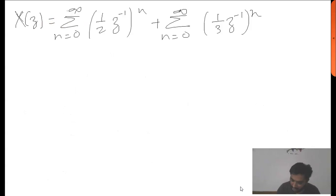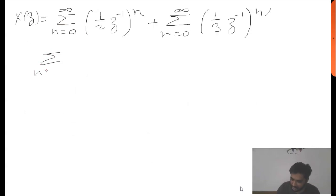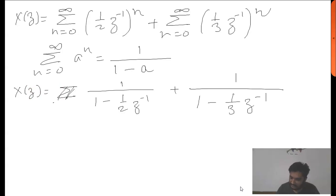X(Z) will be, we know that summation from n equals 0 to infinity of a to the power n equals 1 over (1 minus a), and therefore X(Z) will be... What will be the ROC?